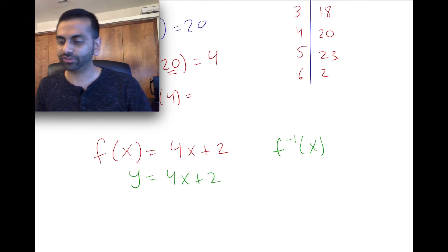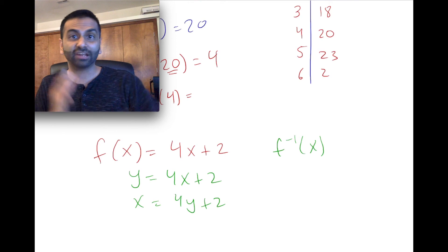And if we were to switch which is which, then that's like the output is equal to 4y plus 2, right? And so now we just got to solve for y, solve for our new output, right?